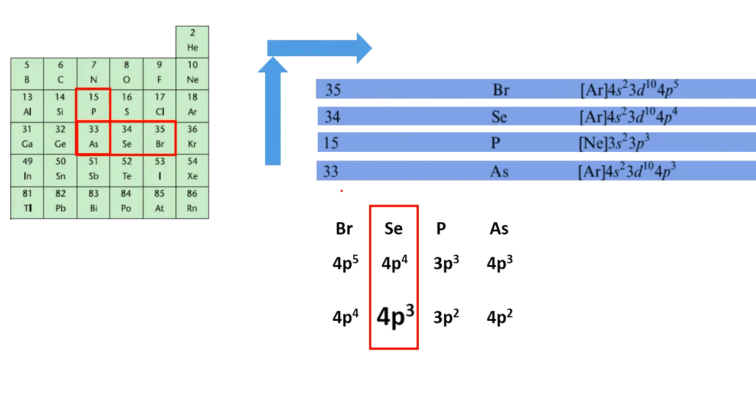For the next trends, how it is increasing, we will show. First is selenium. Then comes phosphorus and arsenic. Both are having the p3 configuration. One is 3p3 and the other is 4p3.